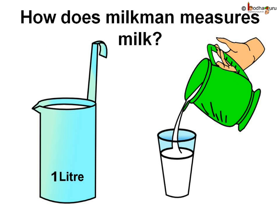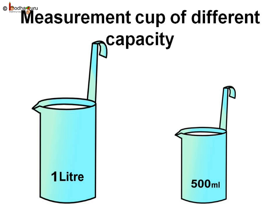How does a milkman measure milk? He uses a 1 litre measuring container. The milkman may also have a measuring container of 500 ml to measure half a litre.